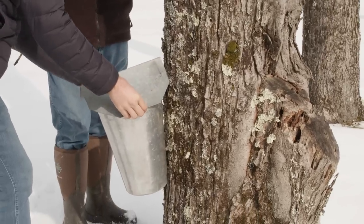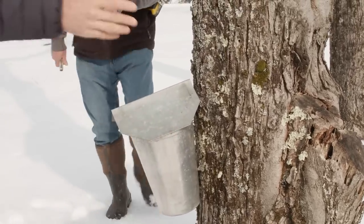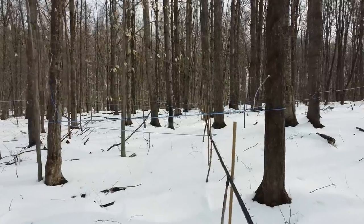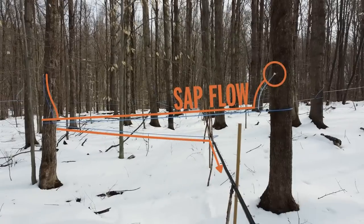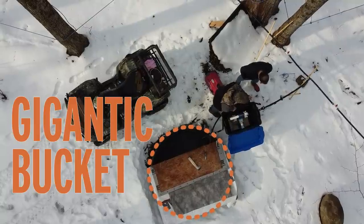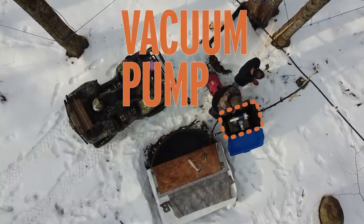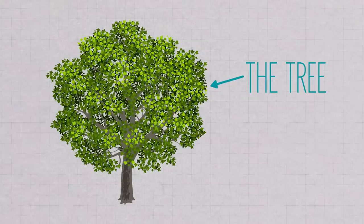Now, if you are trying to make a lot of syrup, this is not the most efficient technique. This is much more efficient. Sap from 50 to 150 trees flows down these blue tubes into this black mainline tube, and then collects here in this gigantic bucket. You can even hook up a vacuum pump to speed up the collection process and pull more sap out of the tree.